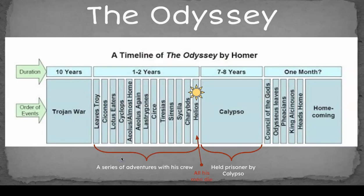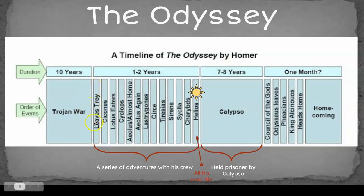Let's start with a timeline. The Odyssey takes place over 10 years. The Iliad, which is the story that precedes the Odyssey, is the story of the Trojan War. So the Odyssey's timeline begins when Odysseus leaves Troy on his way home.